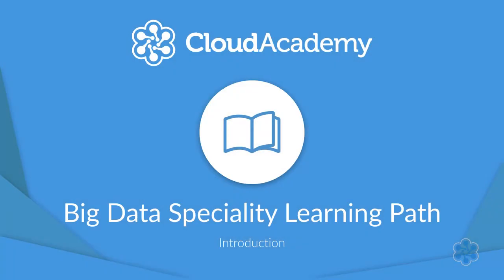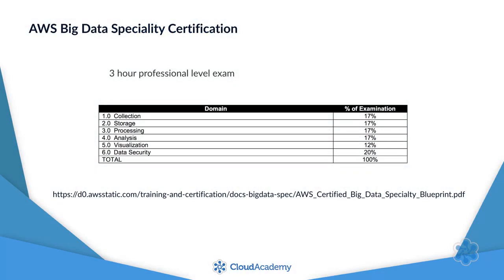Hi, Cloud Academy ninjas. Welcome to the wonderful world of big data. This learning path prepares you for the AWS Big Data Specialty Certification. It's a three-hour professional-level certification exam. For this certification, we need to have an in-depth understanding of big data options that AWS provides, and most importantly, we need to know when to use each of those services.